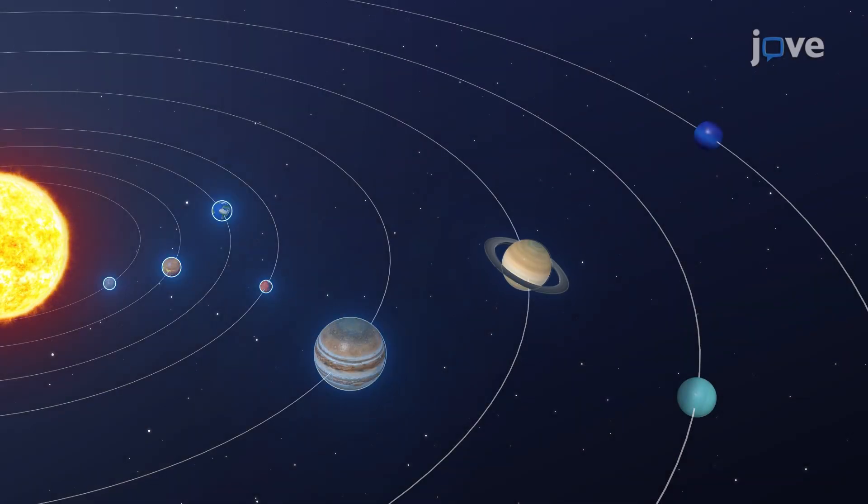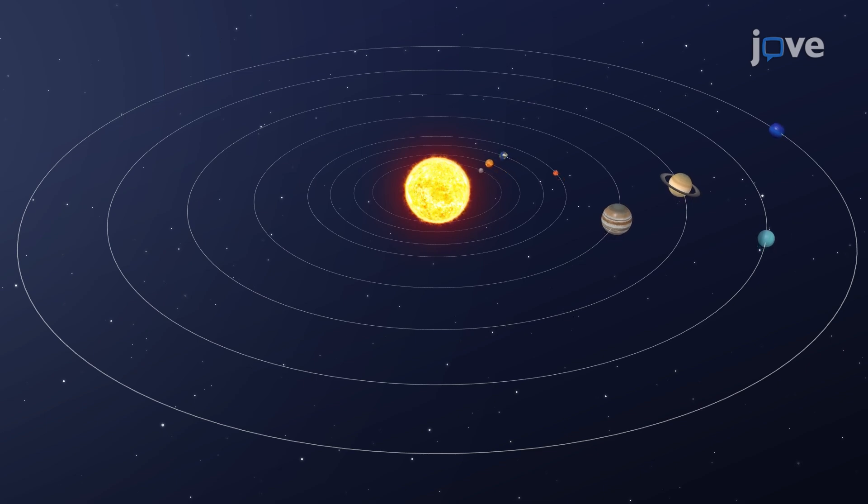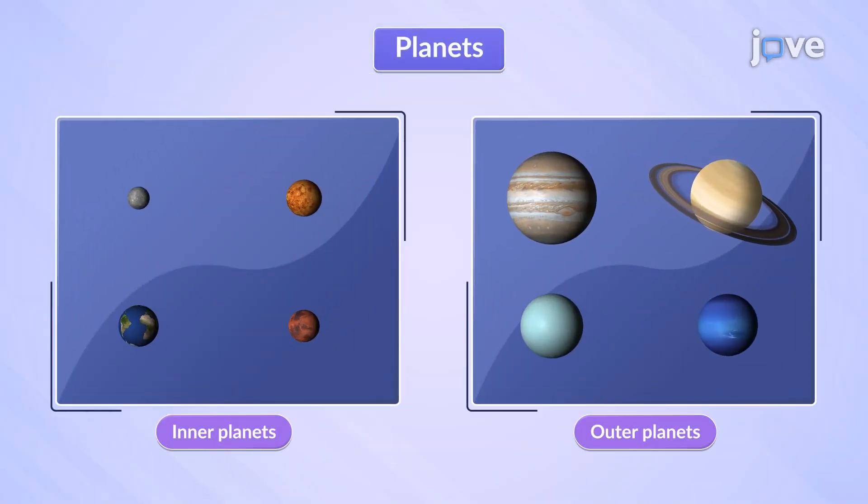Our solar system has eight planets, each orbiting at a different distance from the sun. Based on this, we can classify them into two groups: inner and outer planets.